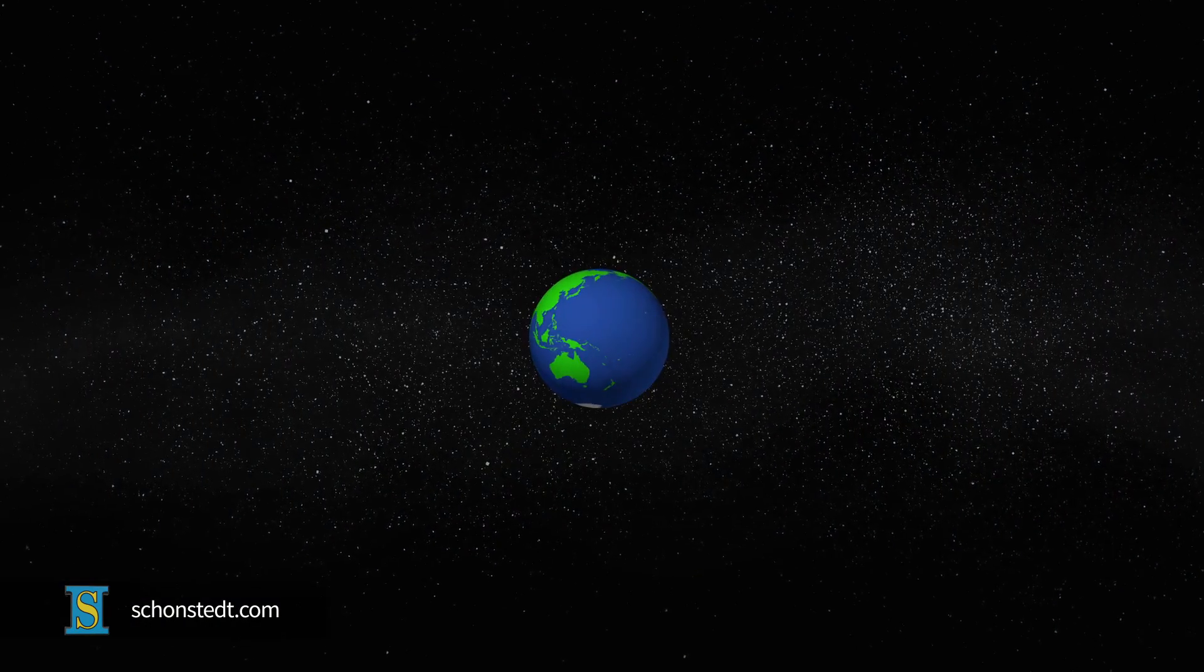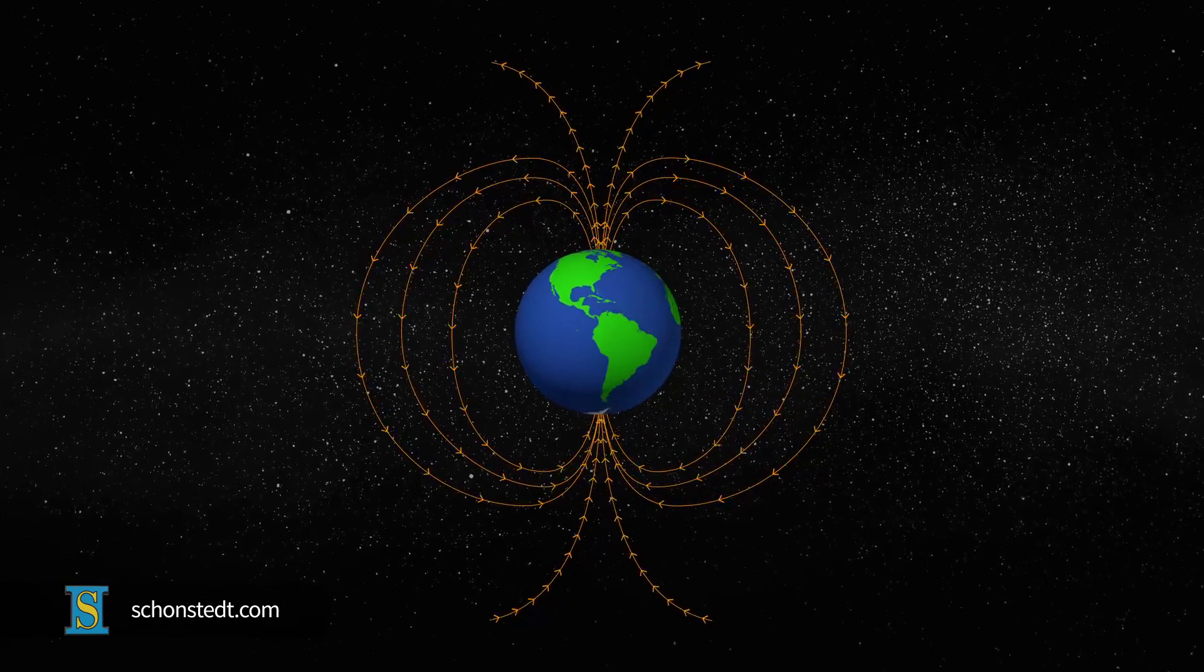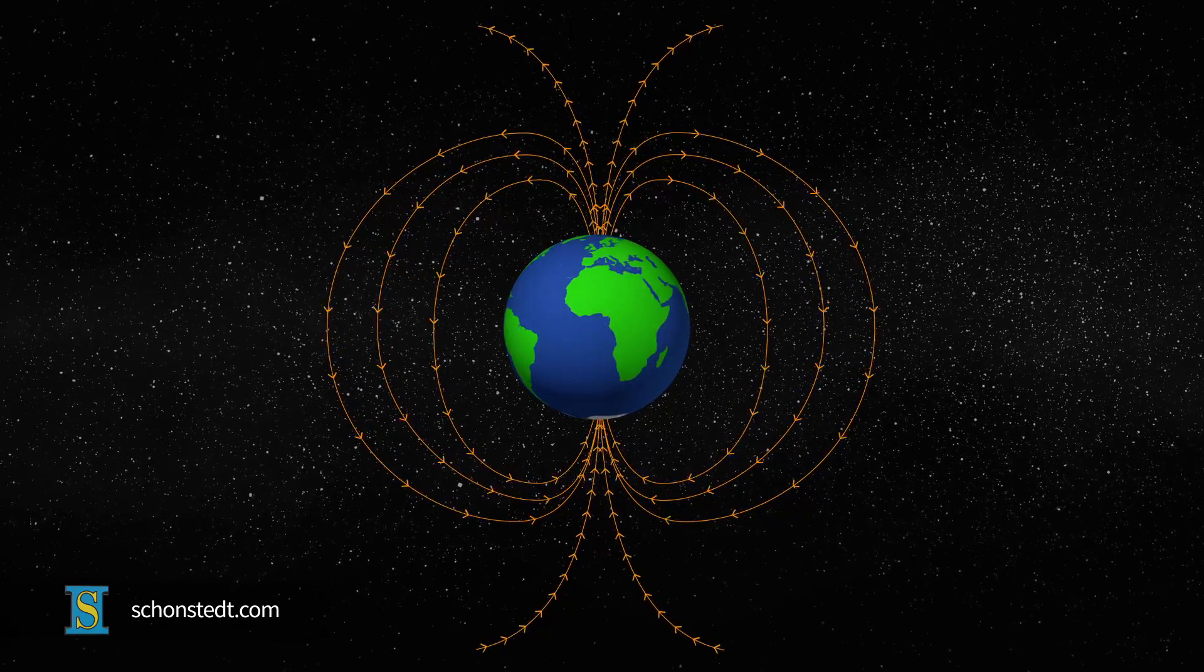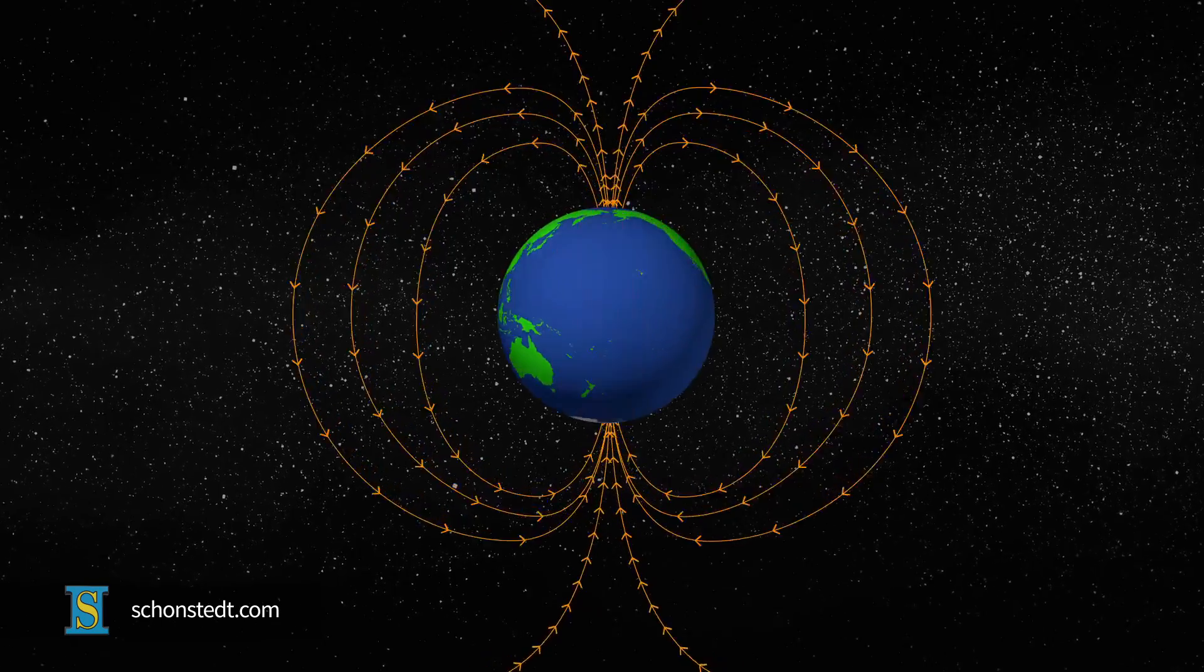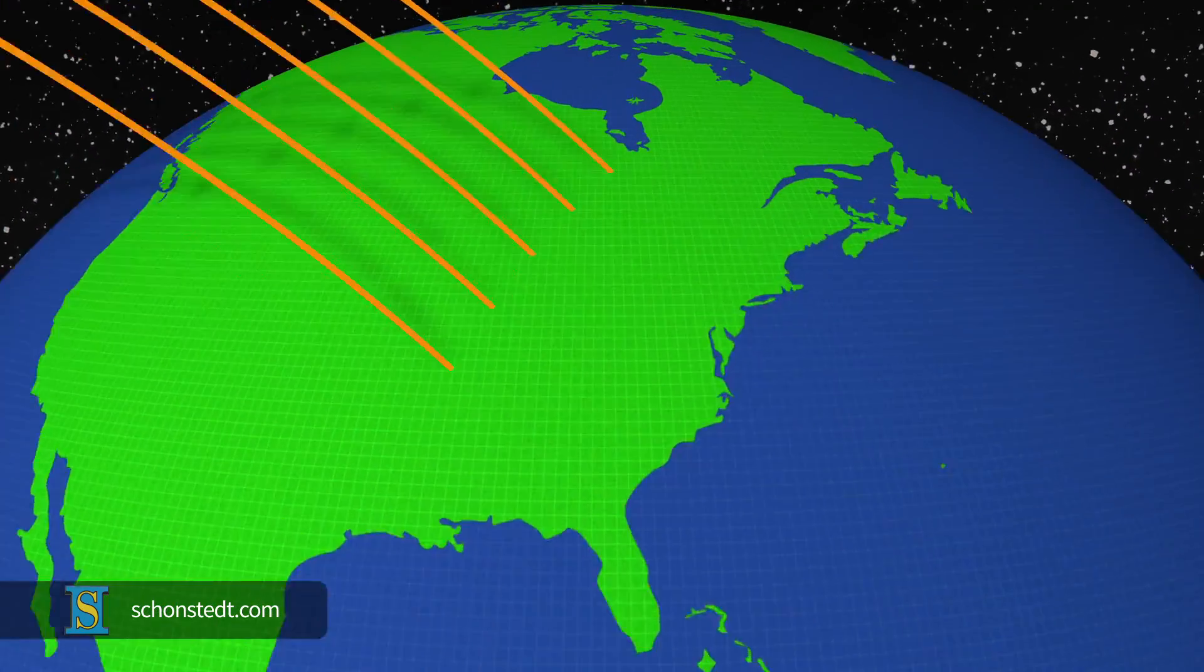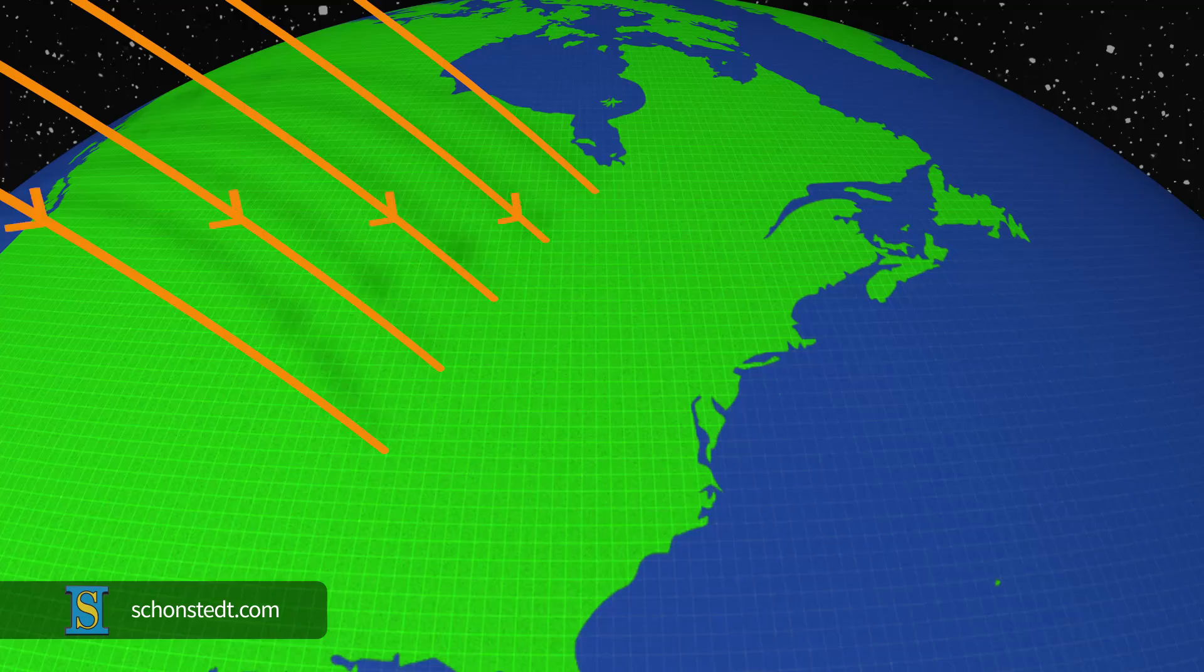The Earth behaves like a large magnet, and its magnetic field is typically represented with lines, much like it is for a common magnet. So, at every point on and below the surface of the Earth, there is a level of magnetic field present.